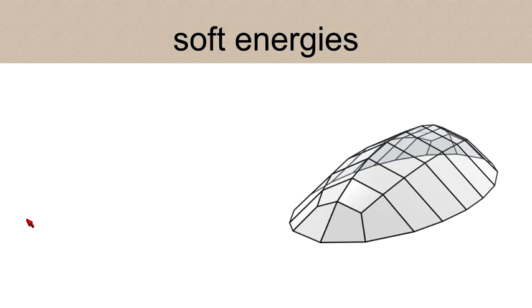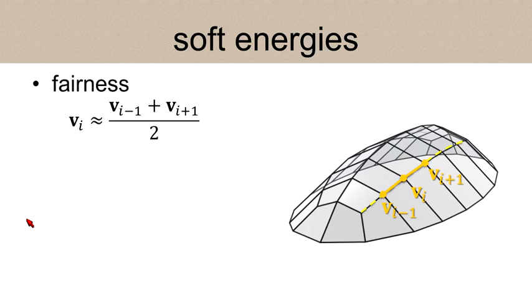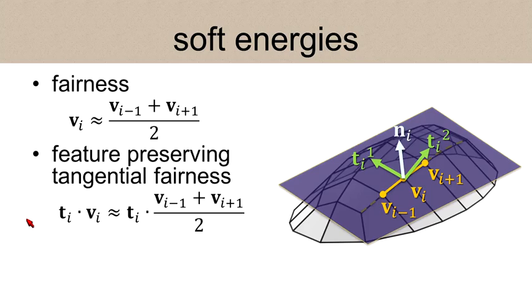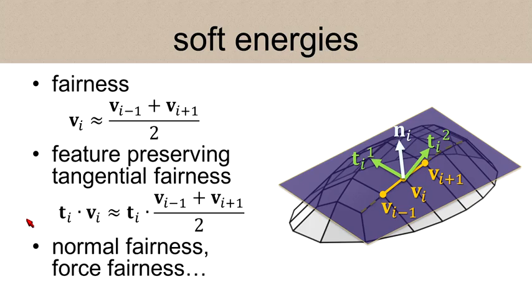Besides hard constraints, we could seek soft energies such as smoothness or fairness of a structure. For every polyline, we require a vertex to lie close to the midpoint of its adjacent vertices. However, such fairness energy would sometimes be feature smoothing, as the minimizer would be a straight line with equally distributed vertices. Thus, we also introduce tangential fairness energy, where we only require such conditions on tangent planes of vertices. Thus only geodesic curvature will be minimized while normal ones remain intact. This energy is feature-preserving. Of course, we can devise a large family of different fairness energies to tackle different situations.